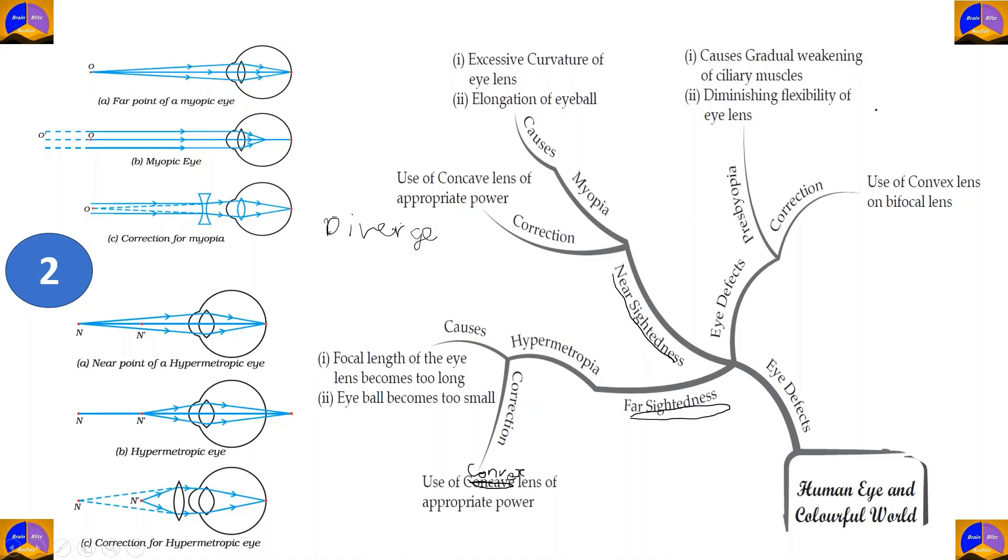The third type of eye defect is known as presbyopia. This is caused by gradual weakening of ciliary muscles or the diminishing flexibility of eye lens. This makes it hard for a human eye to focus either way, resulting in both myopia and hypermetropia. Therefore, we use bifocal lens to mitigate this effect.